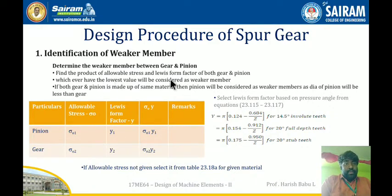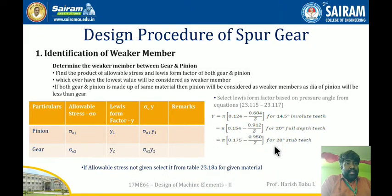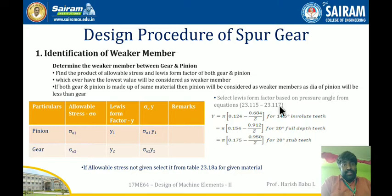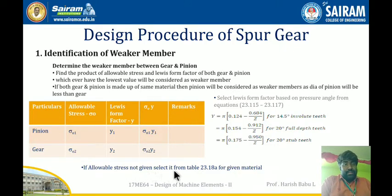To select the Lewis form factor, you have to check the pressure angle. The equations are from 23.115 to 23.117, where y equals pi into the respective value for 14.5°, 20° full depth, and 20° stub tooth. You prepare a table for pinion and gear with columns for σ₀₁, σ₀₂ (allowable stress), and Lewis form factors y1 and y2, then compute the product for each. The member with the lower product is the weaker one. If the allowable stress is not given, it should be selected from table 23.18 for the given material.